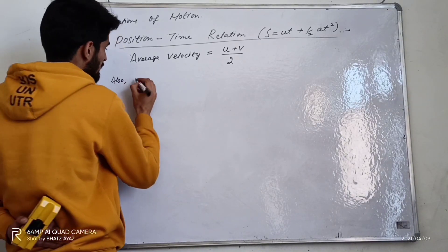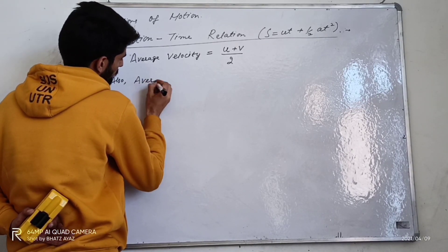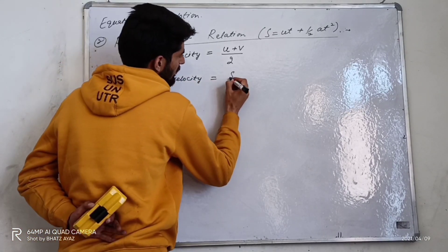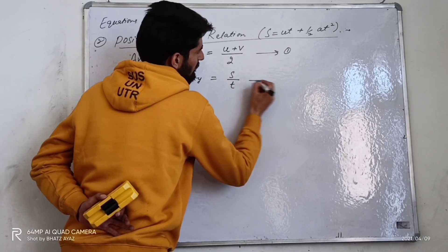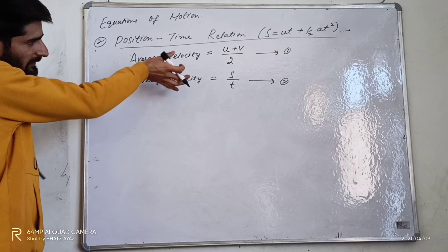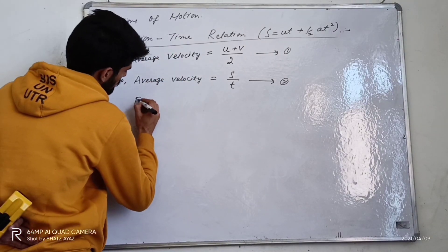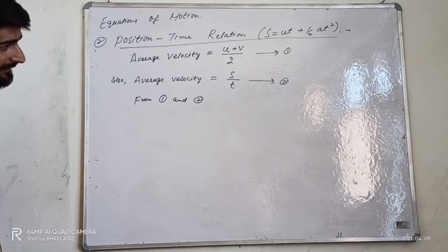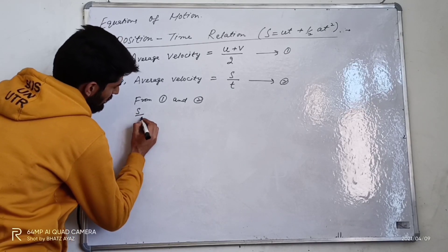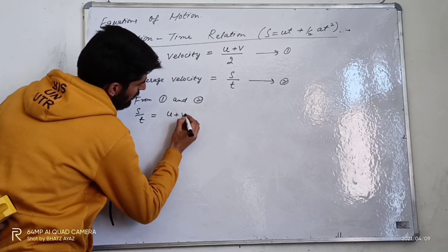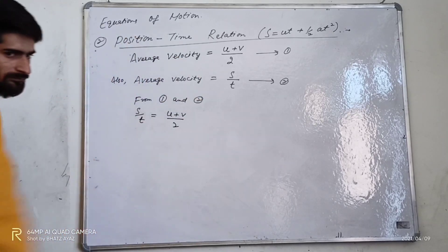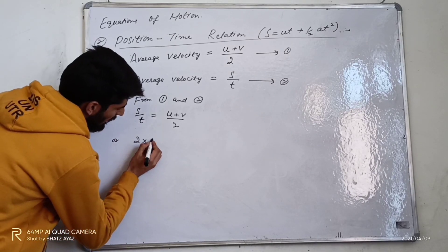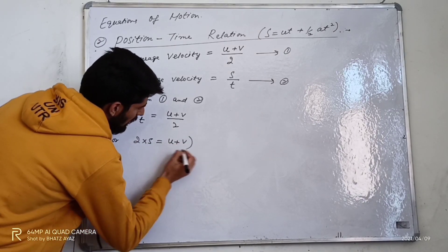Also, I can write that average velocity is equal to s divided by t. Since we have two equations for average velocity, from the first and second I can write: s divided by t is equal to u plus v divided by 2. Cross-multiplying gives: 2s is equal to u plus v into t.